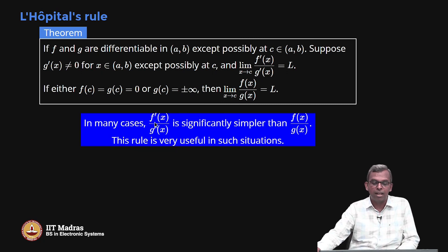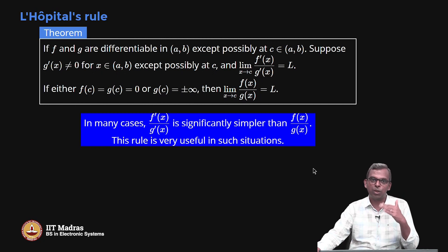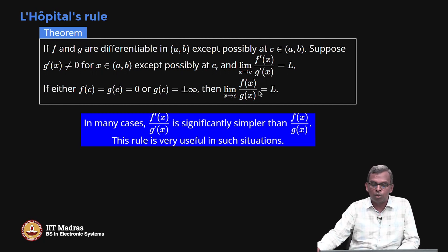Why is this useful? Because in many cases, f'(x) by g'(x) will become significantly simpler than f(x) by g(x). We have already seen that with polynomials, if you keep differentiating, eventually you get a constant and then 0, so the function becomes simpler and simpler — the degree reduces. And remember, you can use this rule once and then keep repeating it. You use it on f(x), g(x) to get f', g', and then you can use it again on f', g'. If the conditions are still true, you can continue with f'', g'', and keep going as long as the condition holds.